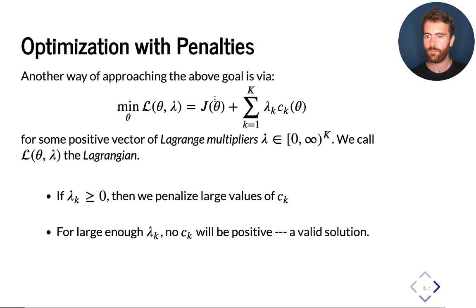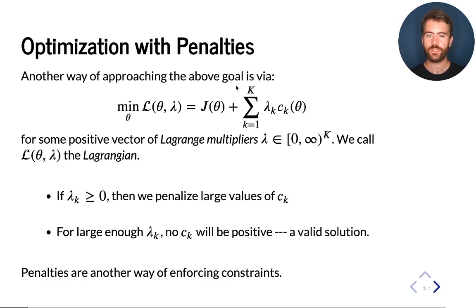So constraints are satisfied and J is small, but we're achieving it via penalties. Penalties are another way of enforcing constraints, at least to some degree. This approach of formulating constraints as penalties is the heart of the Lagrangian approach — the high-level approach we take when working with Lagrangians and Lagrangian duality.